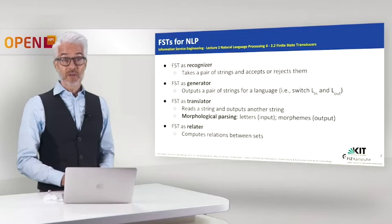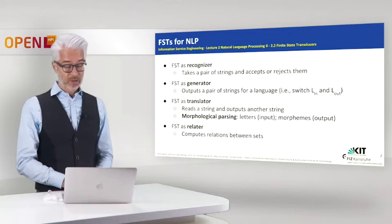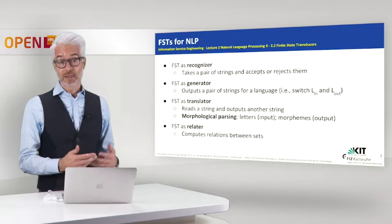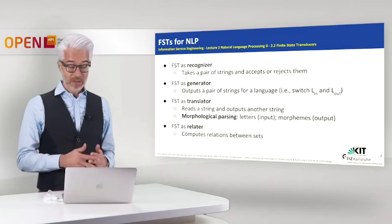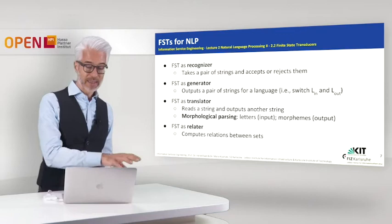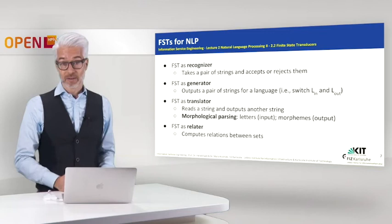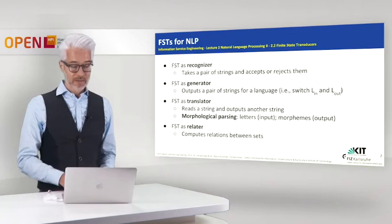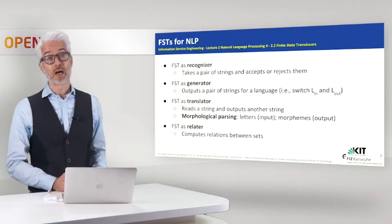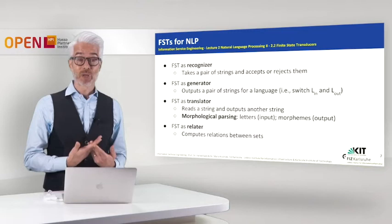You can use finite state transducers in NLP for several applications. For example, you can use it as a recognizer — it can recognize a pair of strings and accept or reject them. It can also be used as a generator, outputting a pair of strings for a language. Or it can work as a translator, reading a string and outputting another string. For morphological parsing, we read letters as input, and the output will be the morphemes and their purpose. You can also use a finite state transducer as a relator, computing a relation between two different kinds of sets.